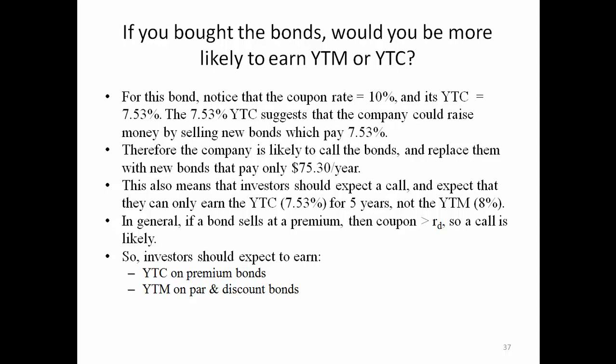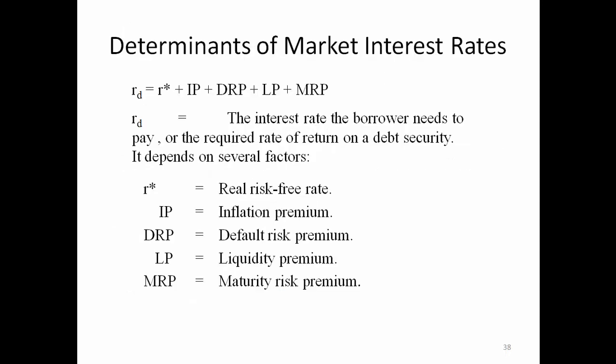In general, if a bond sells at a premium, the coupon interest rate is greater than the market interest rate, so a call is likely. Investors should expect to earn a yield to call on premium bonds and a yield to maturity on bonds traded at par or at a discount.